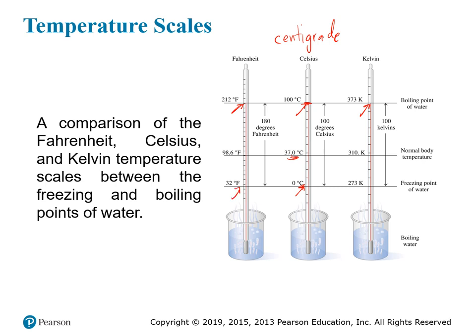Fahrenheit has the strange numbers of 32 degrees for the freezing point of water, corresponding to zero degrees Celsius, and 212 degrees corresponding to 100 degrees Celsius. These are not very round numbers, so they're a little harder to work with. Kelvin has the same unit size as Celsius, so there are still 100 Kelvins between the freezing and boiling points of water. But because the zero point has been shifted down to negative 273 degrees Celsius, zero degrees Celsius corresponds to 273 Kelvin, and the boiling point is 373 Kelvin.